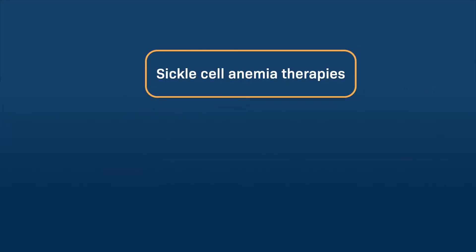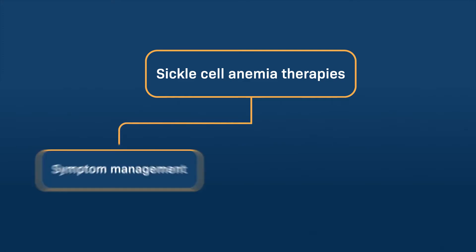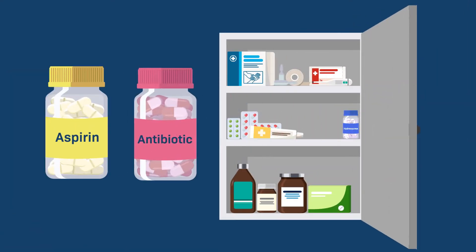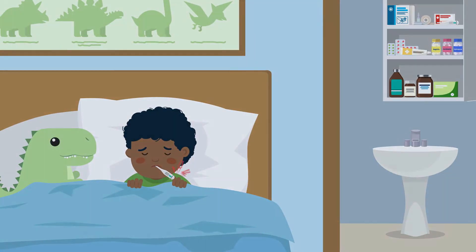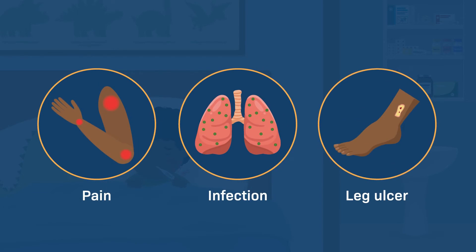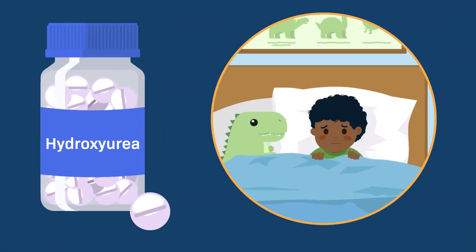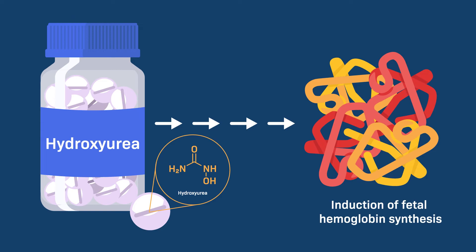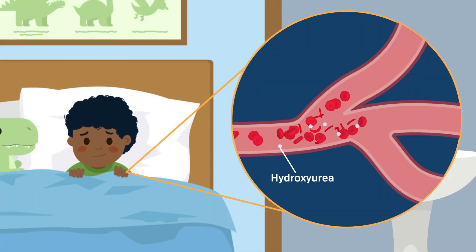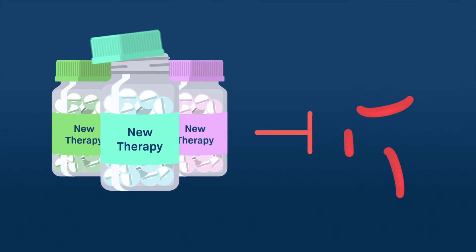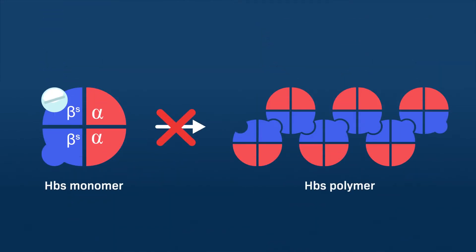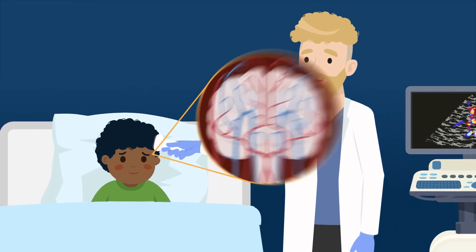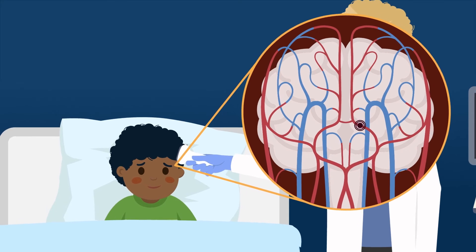Therapies for sickle cell anemia can be divided into two categories: symptom management and potential cure. For symptom management, daily pain relievers and antibiotics have traditionally been prescribed to reduce pain severity, infection, and incidence of sickle cell crisis. Hydroxyurea has also been approved to reduce the frequency of painful episodes by increasing fetal hemoglobin production. Newer approved therapies inhibit sickling by preferential binding to the non-polymerizing conformation of sickle hemoglobin. Regular transcranial doppler ultrasound is also recommended to monitor blood vessel narrowing in the brain in order to prevent silent strokes.